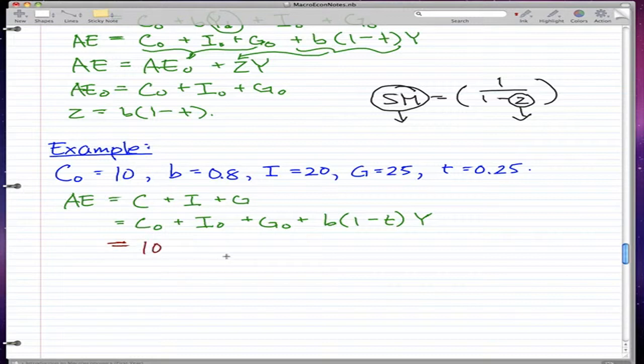So, CO is 10, IO is I, IO is equal to I, and that's equal to 20. CO is equal to G, and that's equal to 25, and B is equal to 0.8 times 1 minus T.